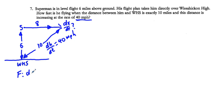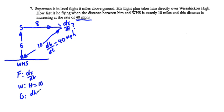Find dx/dt when Superman is 10 miles away (h = 10 miles). Given: dH/dt = 40 mph. Our equation is the Pythagorean theorem: a² + b² = c², written as h² = 6² + x².